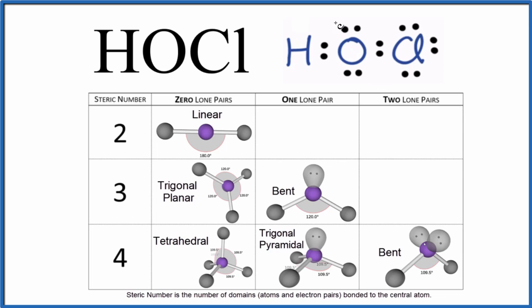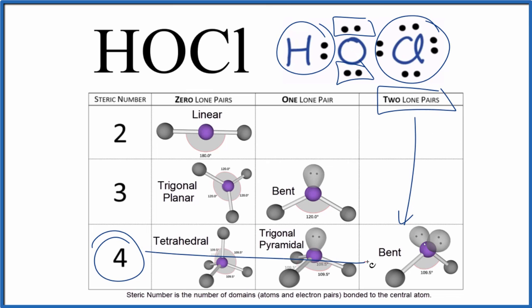That's the number of things attached to the central oxygen here. So we have one, two atoms, and two lone pairs. One, two, three, four. That's our steric number. And so steric number of four with two lone pairs right here, that gives us a bent molecular geometry, bond angle about 109.5. But let's take a look at this in three dimensions.